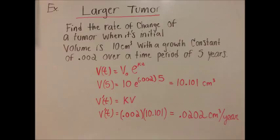We'll plug in 10 for the initial volume, plug in 5 for time, and then we'll plug in 0.002 for the growth constant. Once we find V, we can plug that into the equation V prime of t equals K times V to find the rate of change per year.